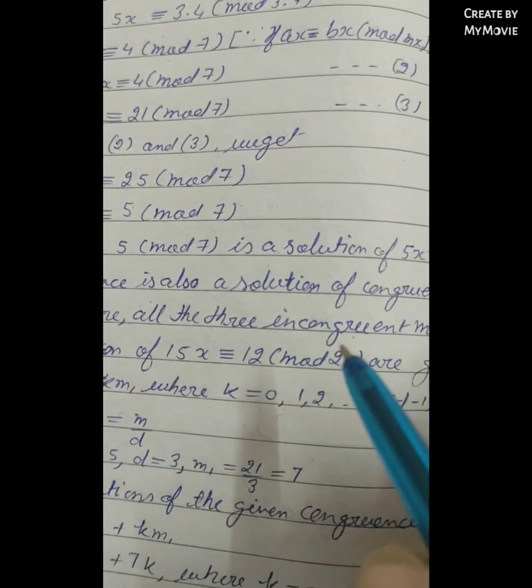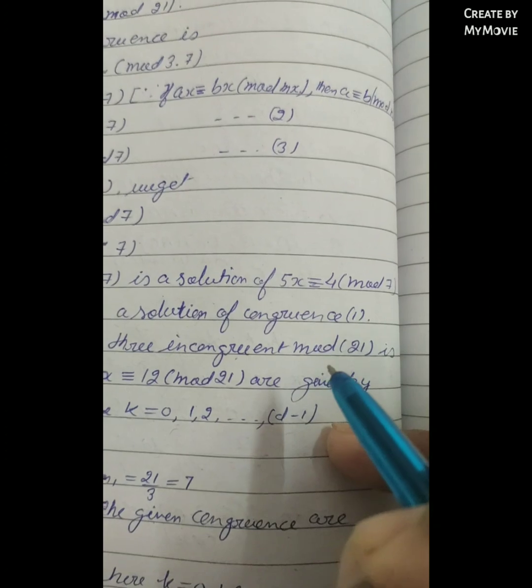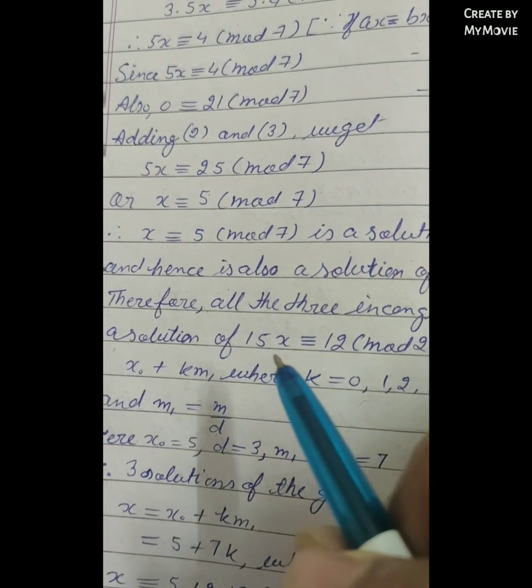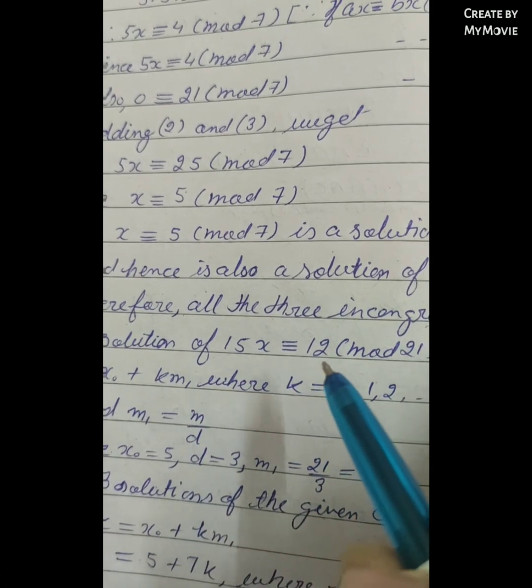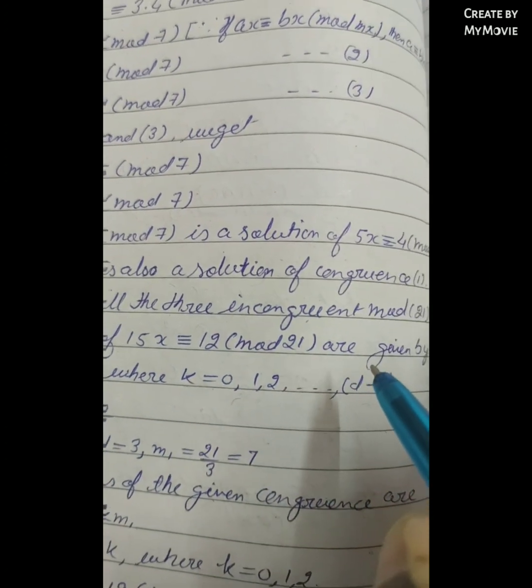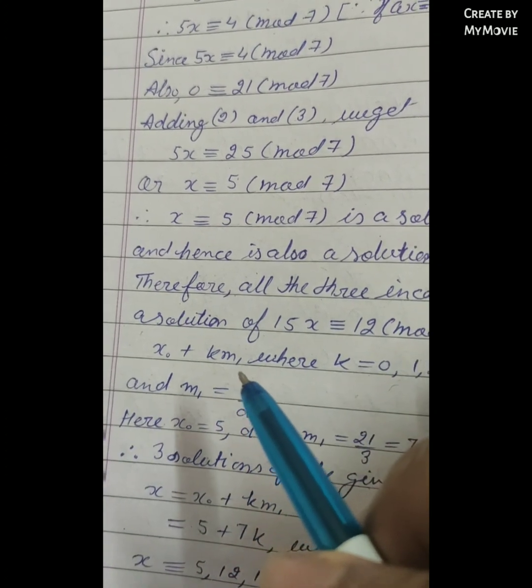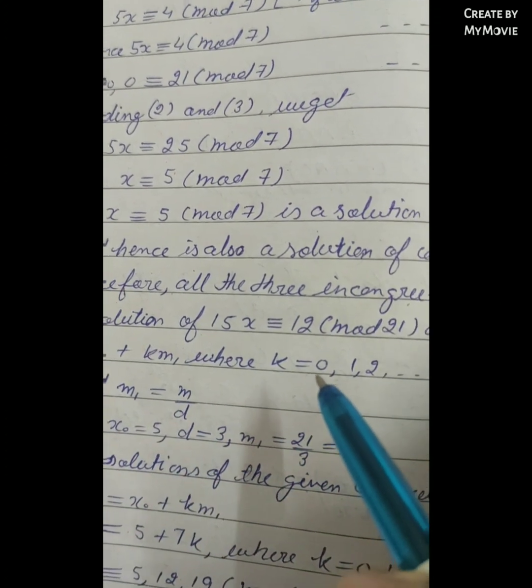all the 3 incongruent modulo 21 solutions of 15x ≡ 12 (mod 21) are given by x₀ + km₁ where k = 0, 1,